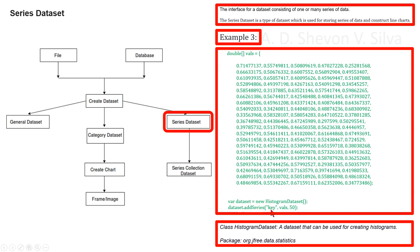For addSeries: the key is the series key — null is not permitted. The values are not null permitted. The bins parameter specifies the number of bins, which must be at least one.